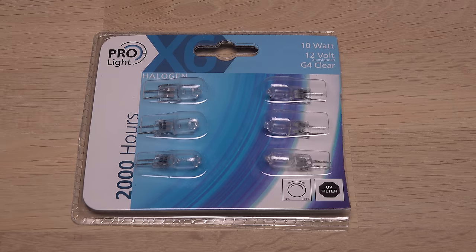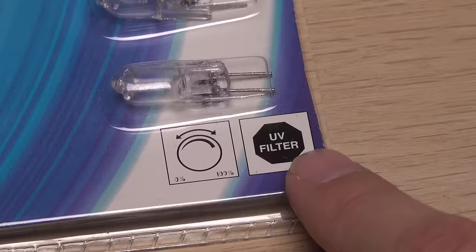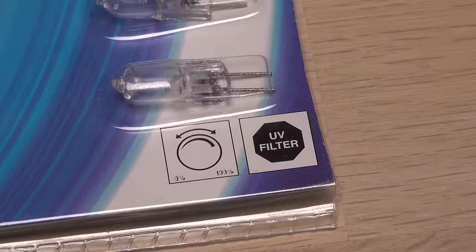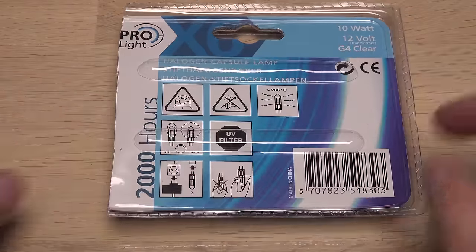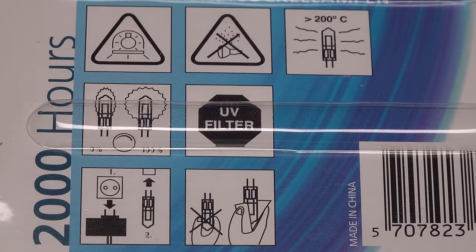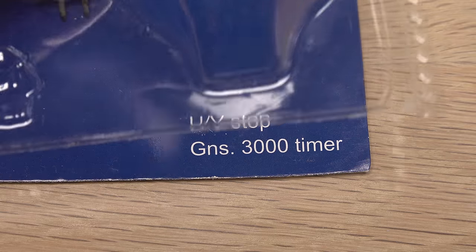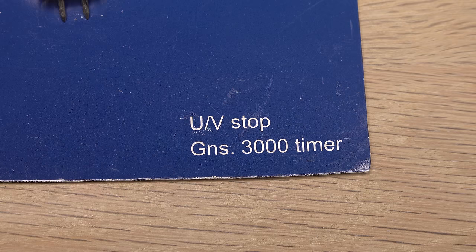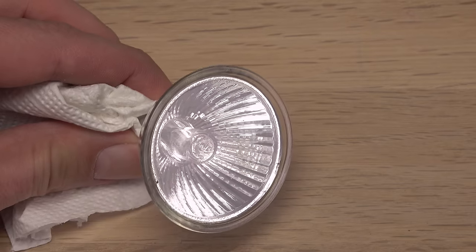The lights use smaller, less power hungry halogen bulbs. 10 watts for the ones in the bathroom, which says UV filter on the packaging. That's a bit ambiguous. Does it mean they are already equipped with a UV filter, or need to be used with a UV filter? The one in the kitchen is 35 watts and says U slash V stop on the packaging. I guess they are filtered then. Let's test them for UV leakage.